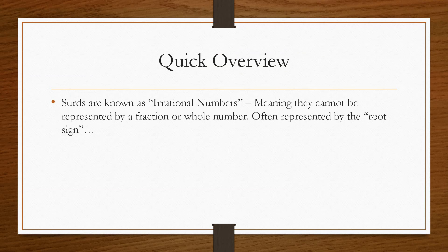So if we take a quick overview, a surd is known as an irrational number, which means that they cannot be represented by a fraction or a whole number and is often represented by the square root sign or even the cubed root sign. Whereas a rational number is the complete opposite, so that is like a whole number or even a fraction like 1 over 4.